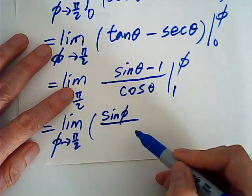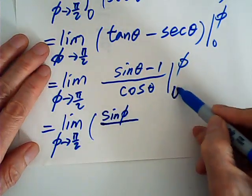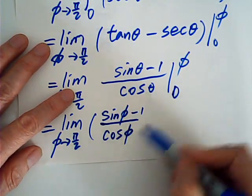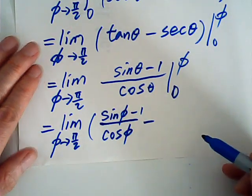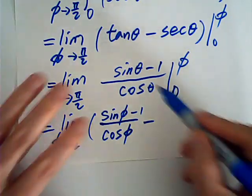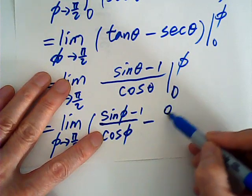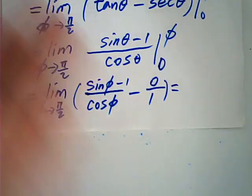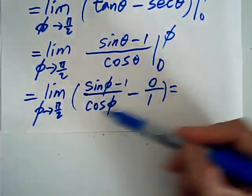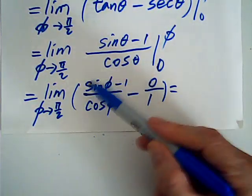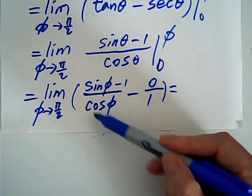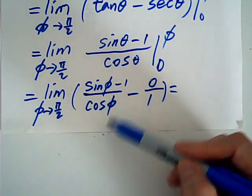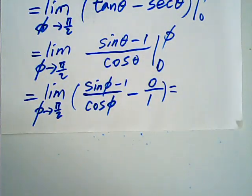So we have sinφ − 1 in the numerator and cosφ in the denominator, evaluated as φ → π/2. This is sinφ minus 1, and this is cosφ. The numerator goes to 0, and the denominator goes to 0 as well. So we can use L'Hôpital's rule.